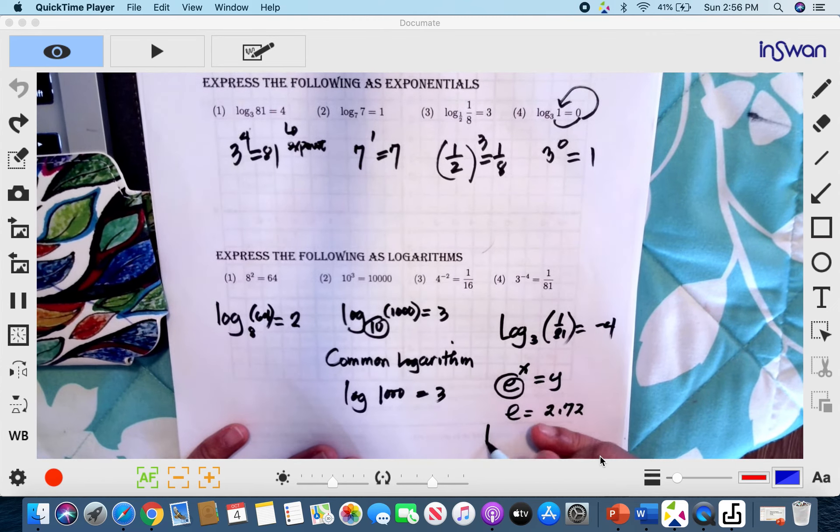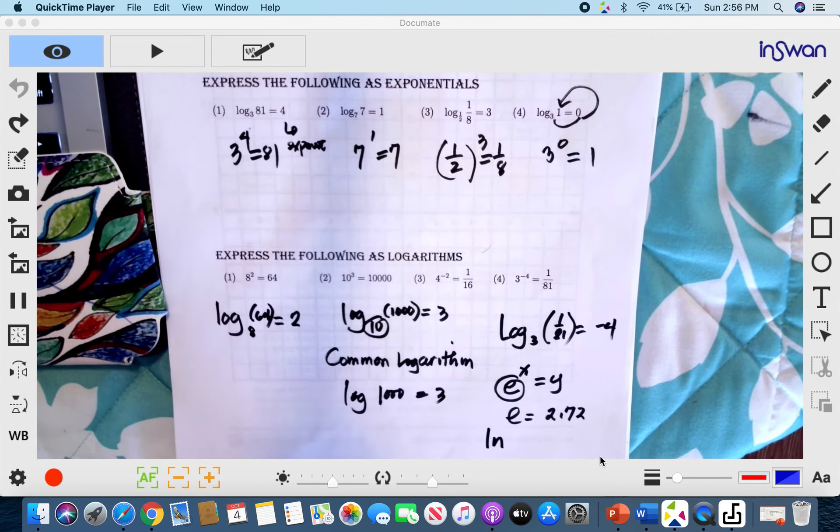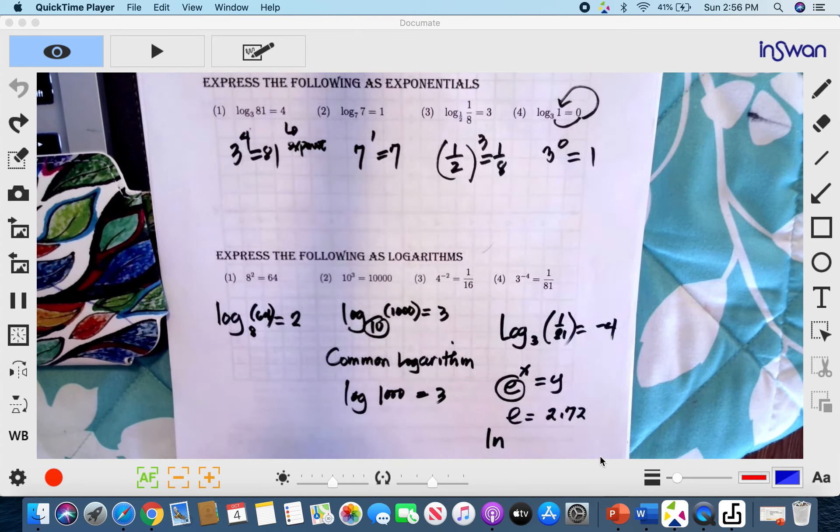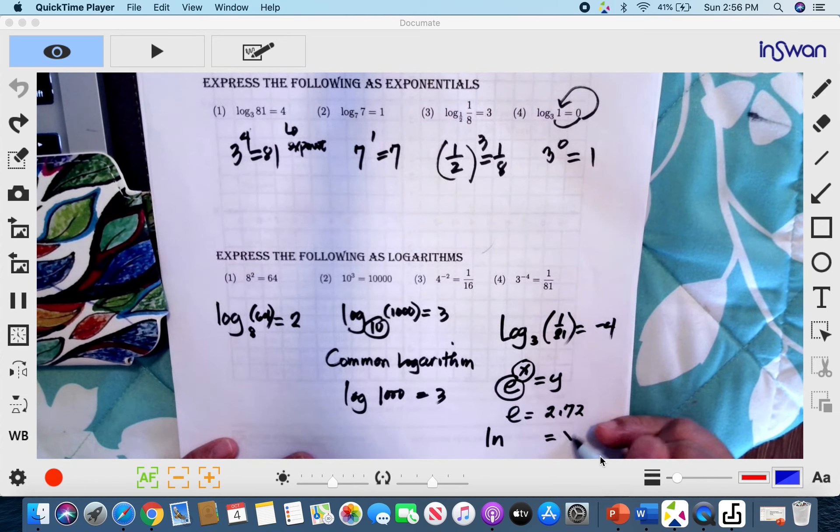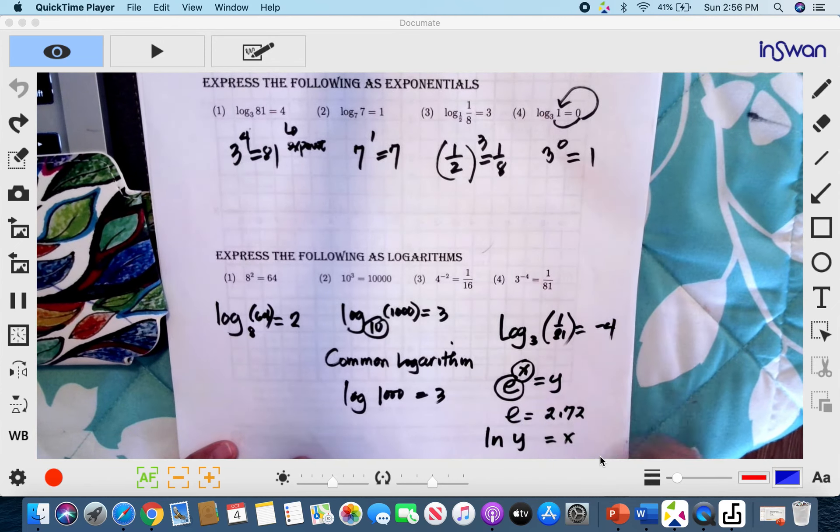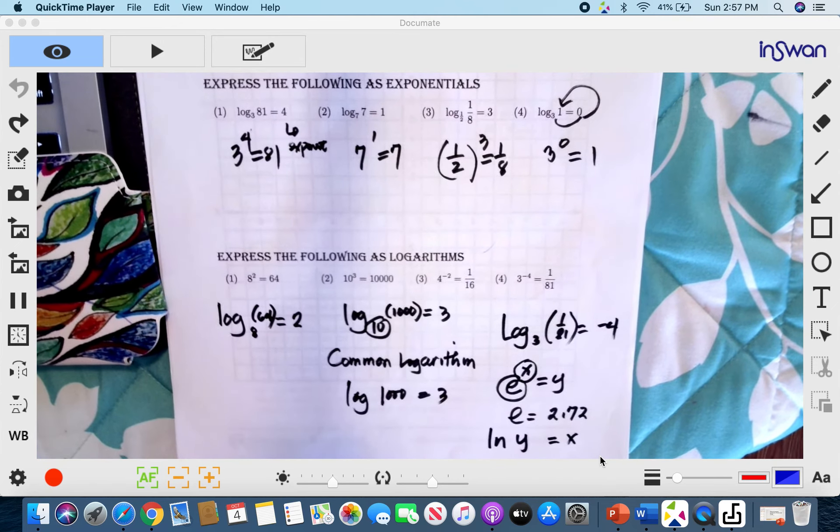So we write it as ln. And it's understood that this is base e. And remember the exponent is x. So therefore, this is equal to x. And you are trying to find the natural logarithm of y.